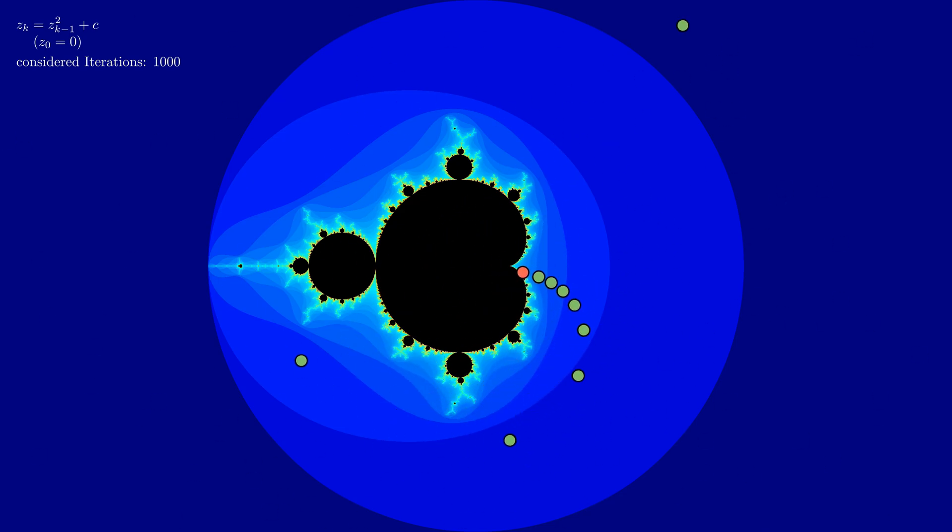What's important for this video, and for the creation of the Buddhabrot, is the idea of tracing out the paths of different start points. To be more clear, we are interested in the path of every pixel which is not considered in the set, and on top of that, we are only interested in the part of the path before it exits the circle with radius 2.